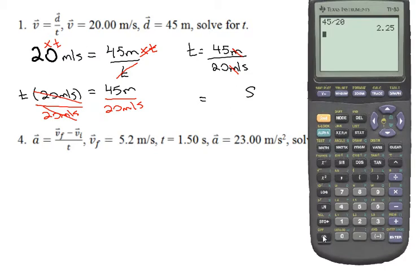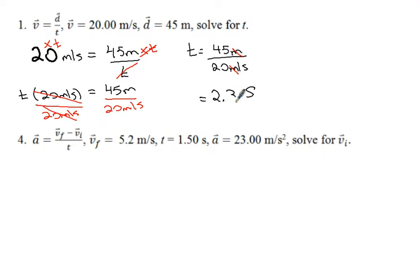Because time is measured in seconds, you can be sure that you did this properly. I type into my calculator 45 over 20 and I'm getting 2.25 meters - 2.25 seconds. So it'll be 2.3 seconds to significant digits. So here's our first one solved.